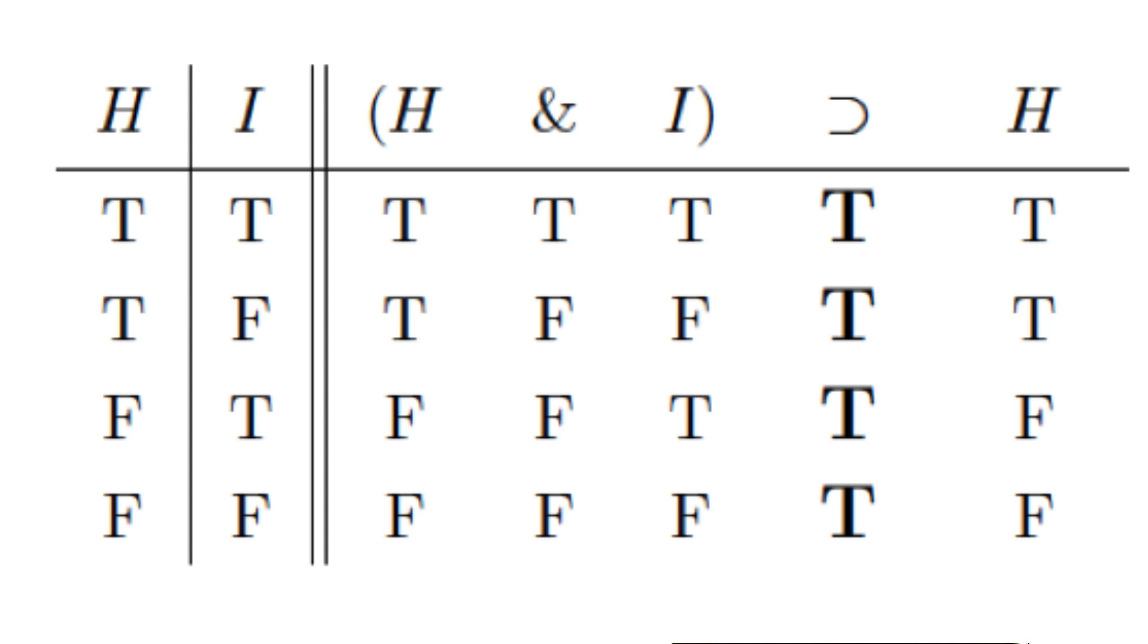Now, this is very interesting. As you can see, the sentence if H and I, then H is true for all possible combinations of truth values and therefore for all possible substitution instances.